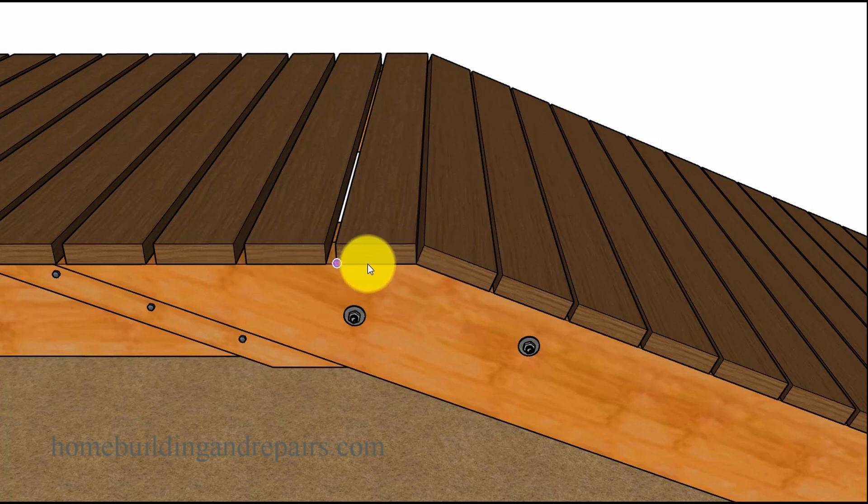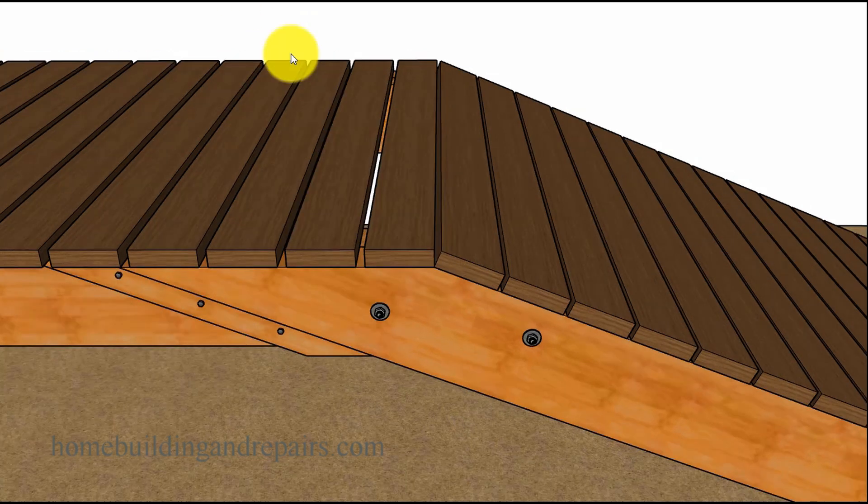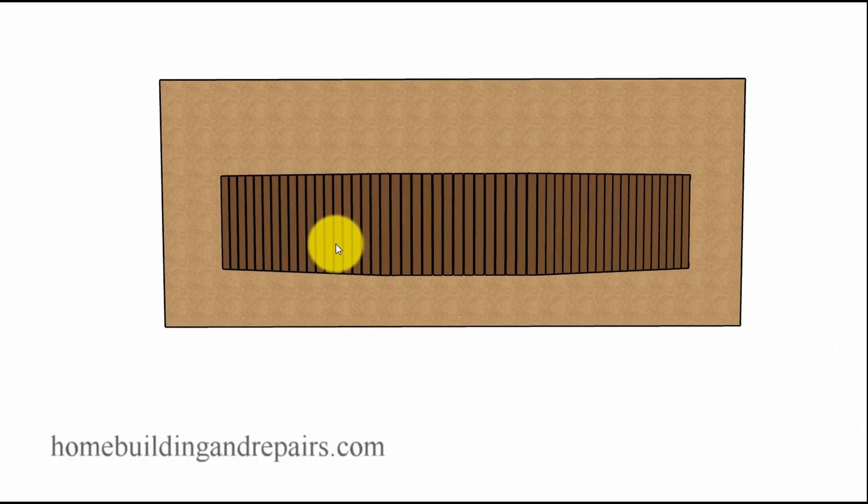Just do some measuring and see where the decking is going to break at. And if it is, you might be able to just move one of these boards over in either direction to make it work out to where it's going to be a nice, even flow of decking boards instead of having a small scrap board or something at the edge.